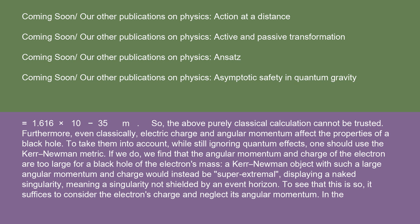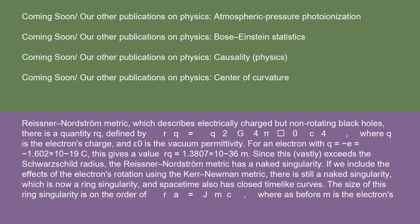To see that this is so, it suffices to consider the electron's charge and neglect its angular momentum. In the Reissner-Nordström metric, which describes electrically charged but non-rotating black holes, there is a quantity RQ, defined by RQ = Q²G/(4πε₀c⁴), where Q is the electron's charge and ε₀ is the vacuum permittivity.